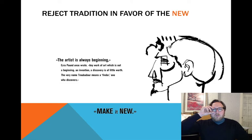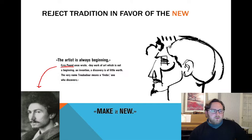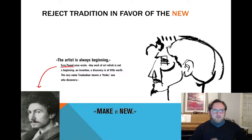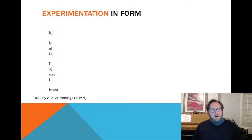One thing modernism does is reject tradition in favor of the new. One of the founders of this school of thought was the American poet Ezra Pound, who once wrote: 'The artist is always beginning. Any work of art which is not a beginning, an invention, a discovery is of little worth. The very name troubadour means a finder.' When asked to give the creed of modern art, he said: 'Make it new. Make it new. Come up with some new way to tell your story or convey the experience in your poem.'